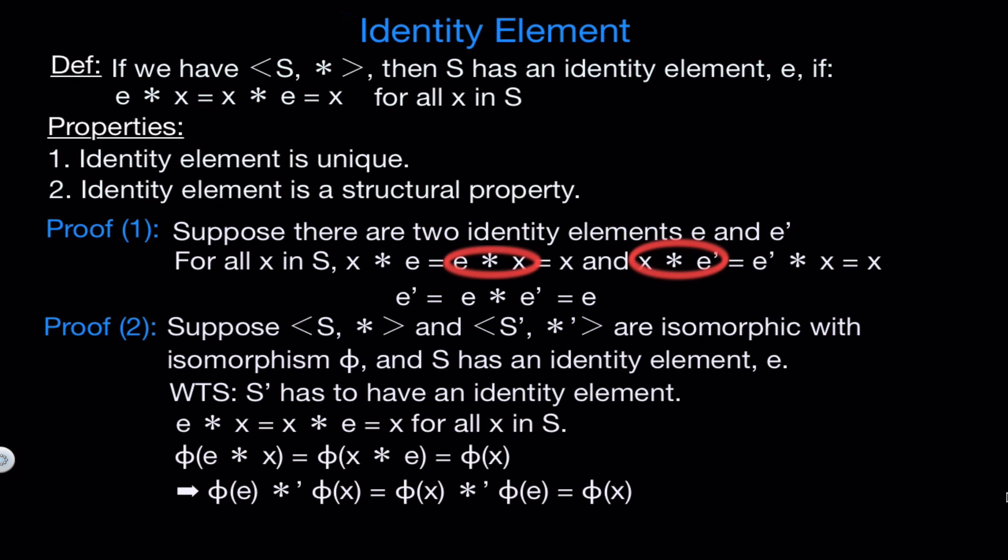And at this point, remember that phi is onto. So for any x' in S', we can find an x in S such that phi of x equals x'. So this statement is true for all phi of x in S'. And with that, we can now see that phi of e is our identity element. So we have not only shown that S' must have an identity element, but we have also shown that any isomorphism must map the identity element of one structure to the identity element of the other structure.